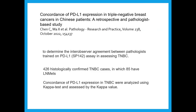My example is a study published this month out of China looking at PDL-1 expression in triple-negative breast cancers. They wanted to look at how well pathologists agreed on PDL-1 staining across 426 histologically confirmed triple-negative breast cancer cases, 85 of which had lymph node metastases. They used the kappa value to assess concordance of reviewers in categorizing PDL-1 expression as positive or negative.